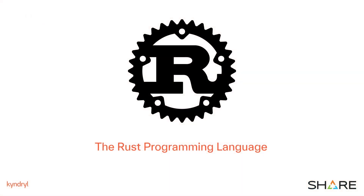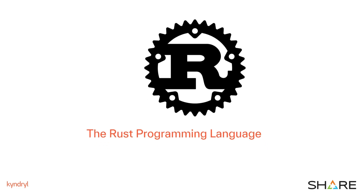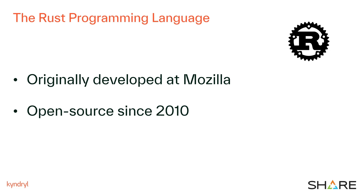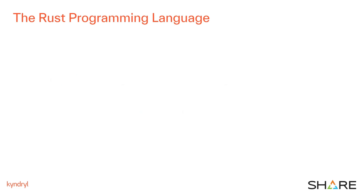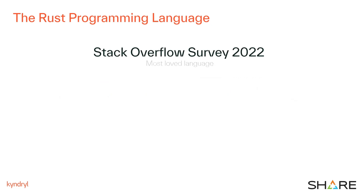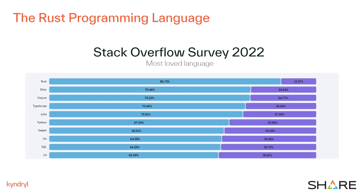First, let's talk a little bit about the Rust language. Rust is a multi-paradigm programming language designed for high-performance, memory-safe system programming. It was originally designed and developed at Mozilla, but since 2010 it's completely open-source with one of the largest user bases in the industry. It has been adopted by several of the largest tech giants, including Amazon, Facebook, Google, and Microsoft. According to the Stack Overflow survey of 2022, Rust is on its seventh year as the most-loved language.